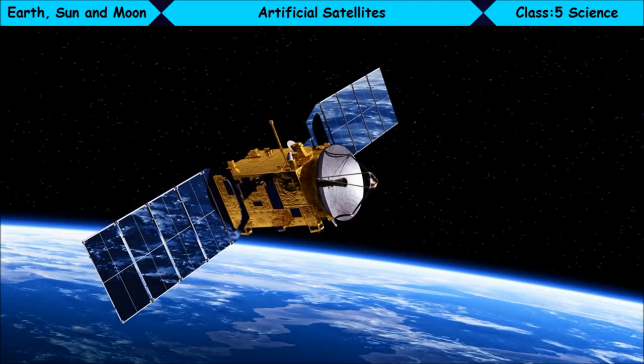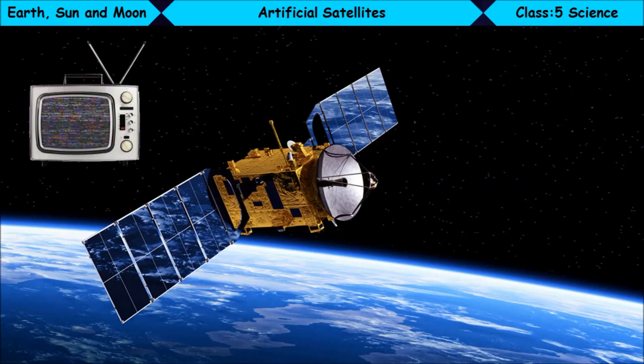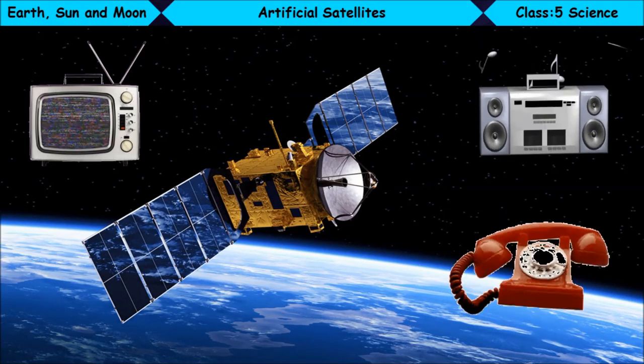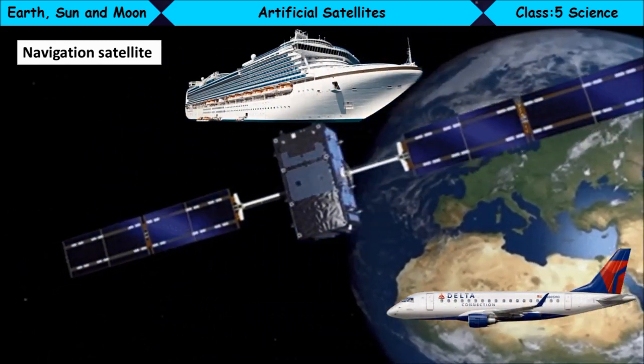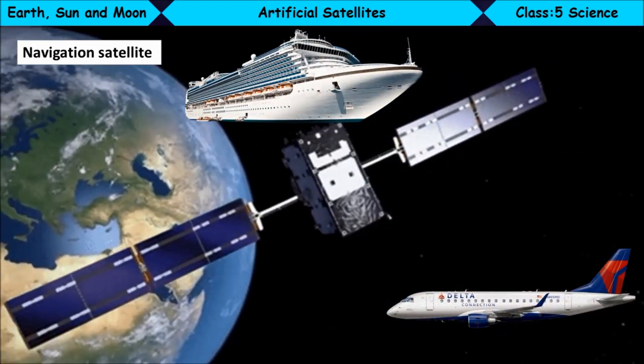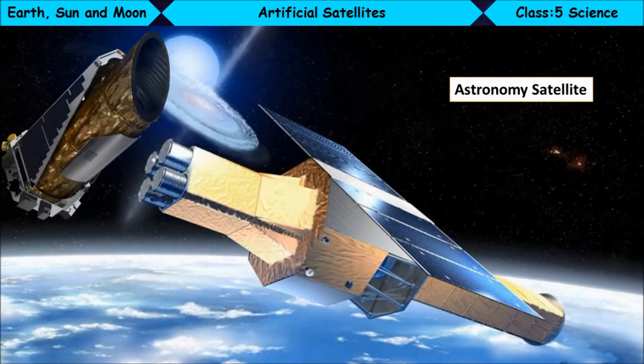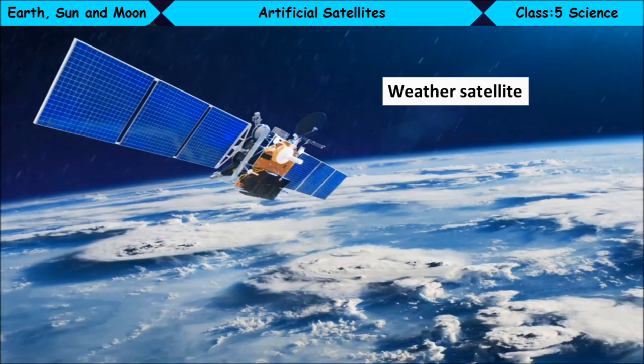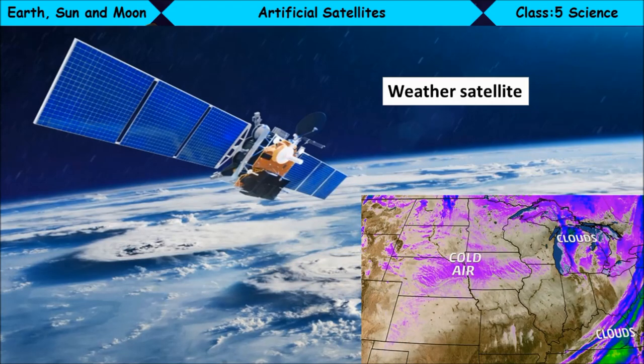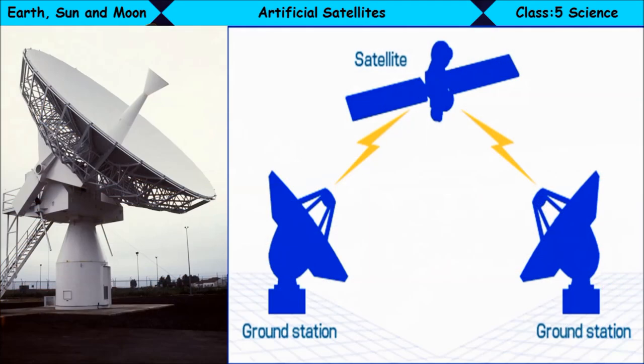Communication satellites send signals for TV and radio programs and telephone calls. Navigation satellites help ships and aircraft find their way. Astronomy satellites carry telescopes into space. And weather satellites help in weather forecasting. Ground stations on Earth send and receive signals to and from these satellites.